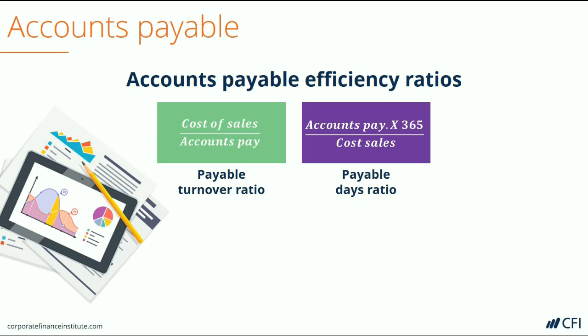For example, if the result of this ratio is 30, that means on average the company pays its bills that are related to cost of goods sold in 30 days.